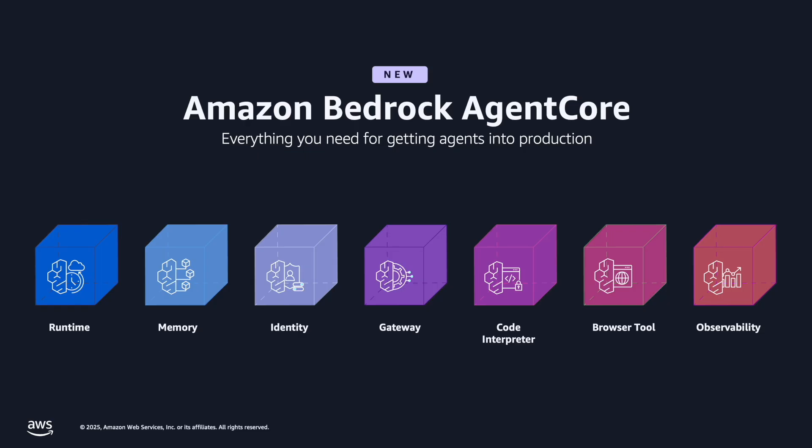Finally, Agent Core Observability helps developers trace, debug, and monitor agent performance. It offers detailed visualization of each step in the agent workflow, enabling developers to audit all the agents' intermediate outputs and debug performance bottlenecks and failures. Observability gives developers real-time visibility through a built-in dashboard in CloudWatch.